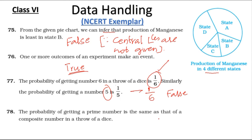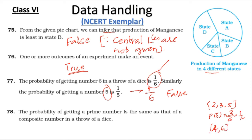Statement 78: The probability of getting a prime number is the same as that of a composite number when we throw a dice. Prime numbers are 2, 3, and 5, so probability is 3 by 6 which is 1 by 2. Composite numbers are 4 and 6, so probability is 2 by 6 which is 1 by 3. These are not equal, so the statement is false.